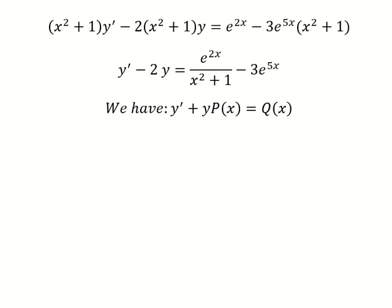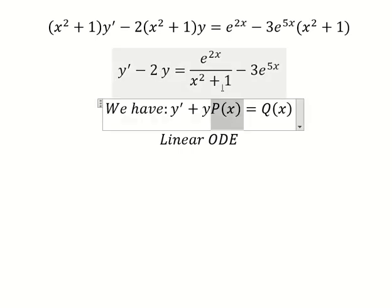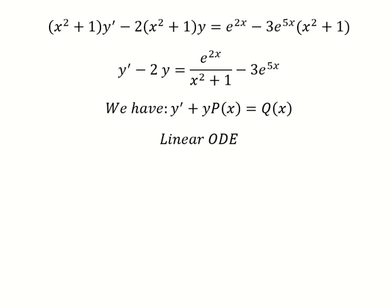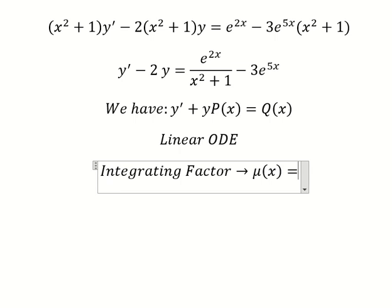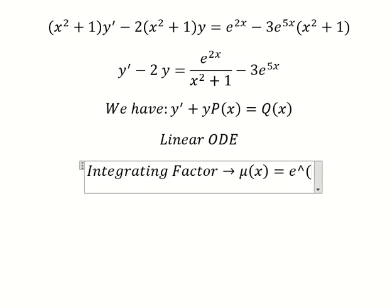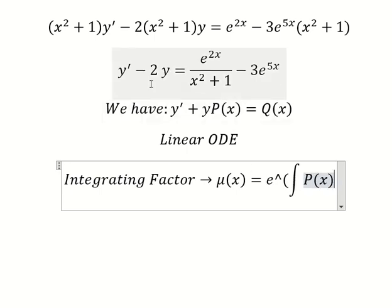This is about linear ordinary differential equations. We can see that negative two is about the coefficient, so we need to find the integrating factor. Now we need to find mu(s), that is e to the power of the integral, and we can see that is about negative two s, so we put negative two in here.